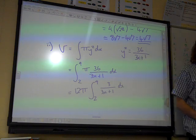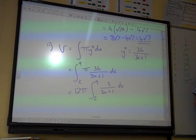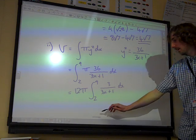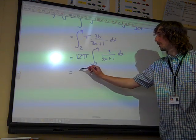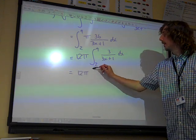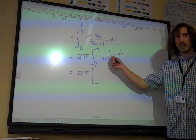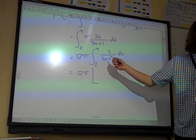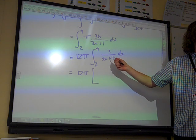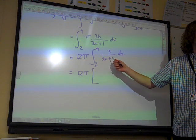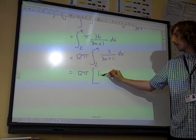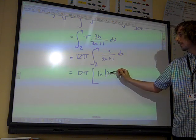Is that a little bit contrived to do that? I mean, you probably wouldn't do that in core 3 days, but that feels kind of obvious now, doesn't it? Which would be 12 pi times, what does that give us now, then? The integral of 3 over 3x plus 1 is?